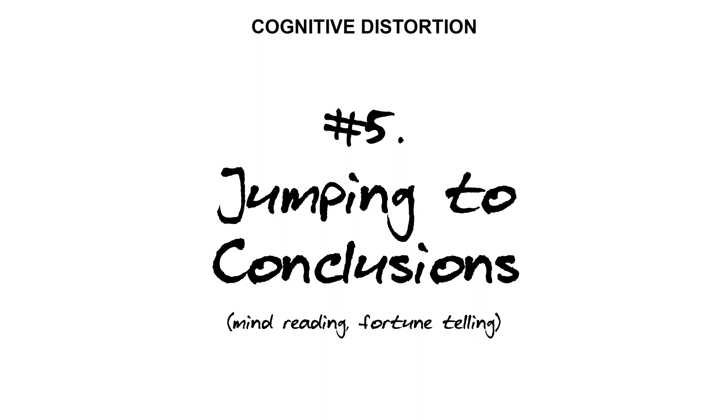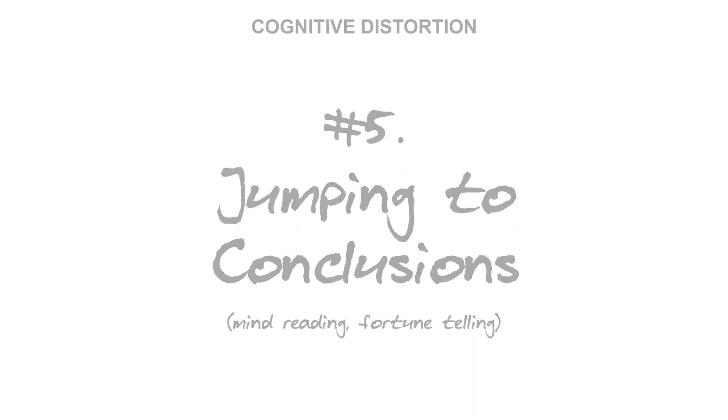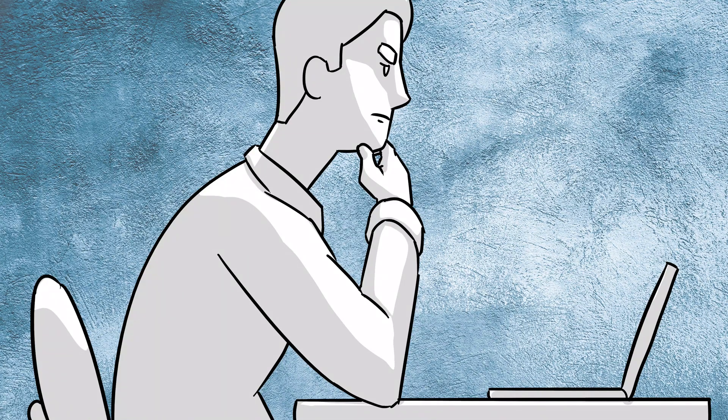Cognitive distortion number five, jumping to conclusions. These are also called mind reading or fortune telling errors. This distortion occurs when you assume you know what someone else is thinking or what their motives are, and also includes assumptions you make when playing out the future in your mind as if it were fact.